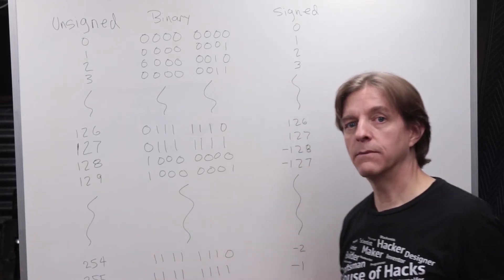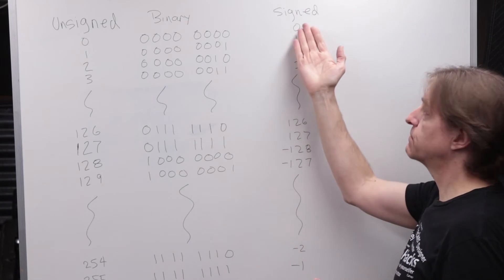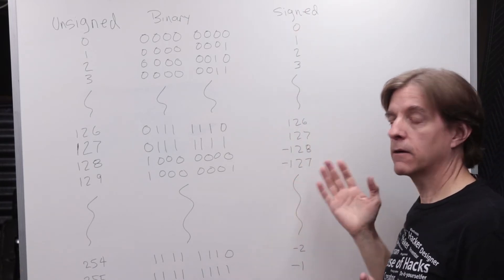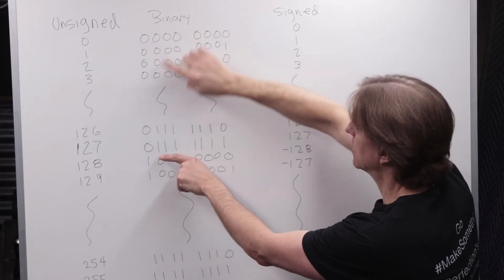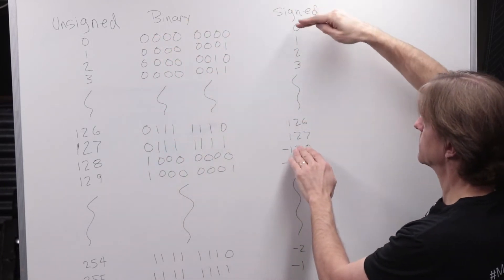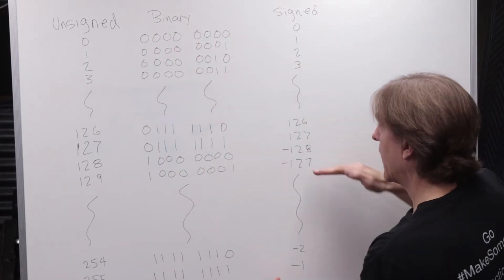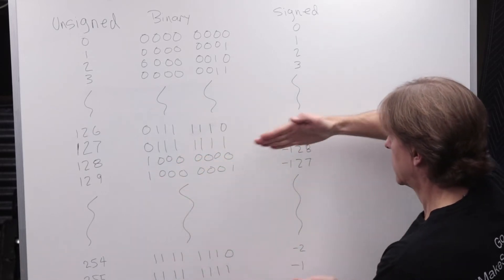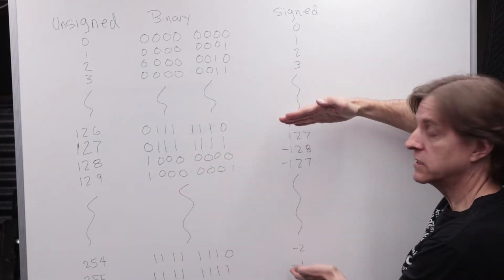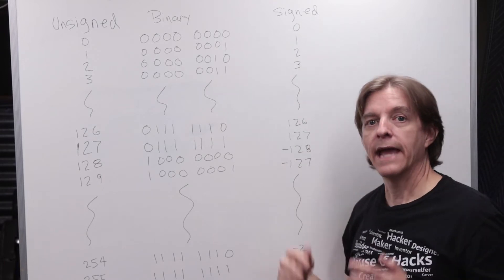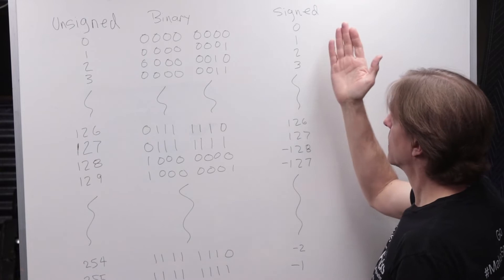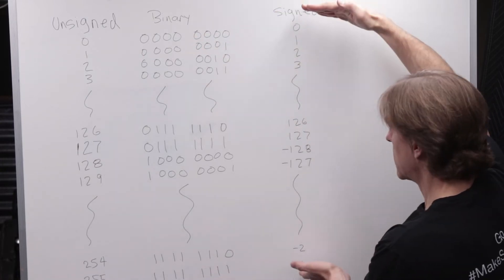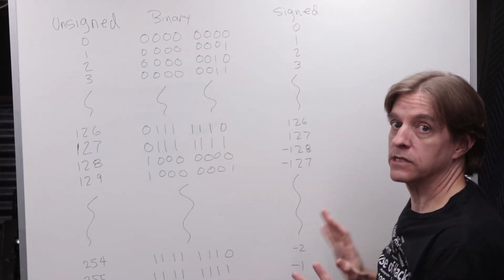When a programmer needs negative numbers, then they define the memory as being signed. And when they do that, the computer will treat all binary numbers that start with 0 as positive integers from 0 to 127, and it will treat all numbers starting with 1 as negative numbers from minus 1 to minus 128. And as long as the programmer maintains this context of treating these numbers as signed, then everything works out just fine.